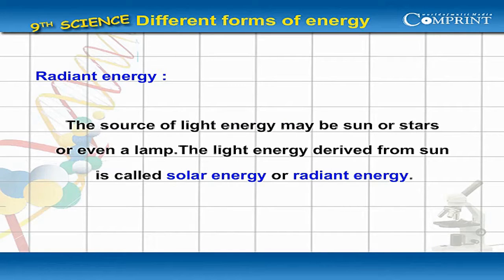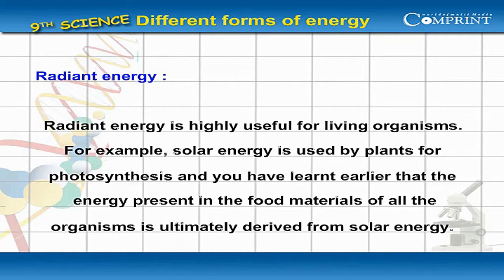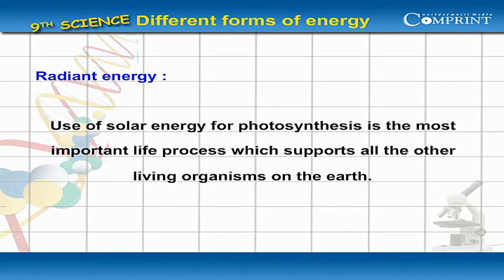or even a lamp. The light energy derived from the Sun is called solar energy or radiant energy. Radiant energy is highly useful for living organisms. For example, solar energy is used by plants for photosynthesis, and the energy present in the food materials of all organisms is ultimately derived from solar energy.